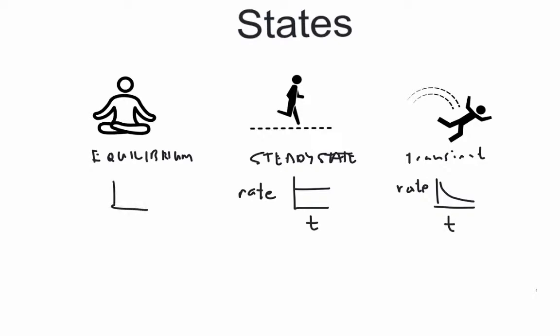In equilibrium we would call the rate of transfer zero. In order to solve heat transfer problems it's important to be able to differentiate these three different states, because they essentially define how you approach the problem. The way the problem is worded will give you clues as to which situation is happening — is it equilibrium, is it steady, or is it transient state?